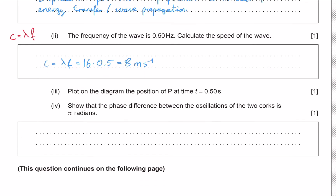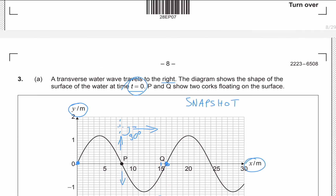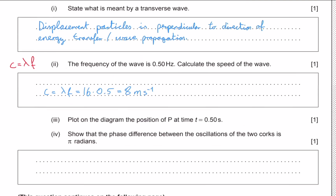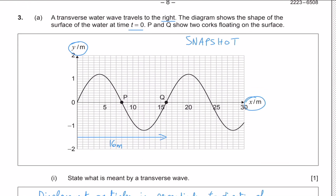Next, we need to plot the position of P at time t equals 0.5 seconds. We know that at t equals 0 the wave looks as shown, and it's moving to the right. So after 0.5 seconds, the wave will have shifted to the right. If we draw the graph again, it will look like the original wave moved over by some units to the right.